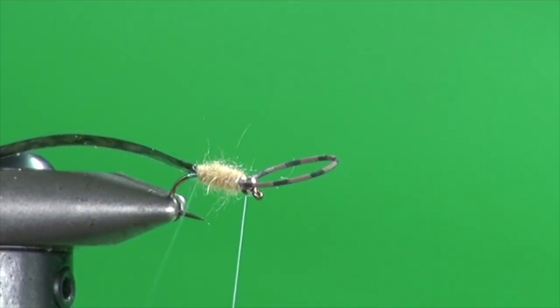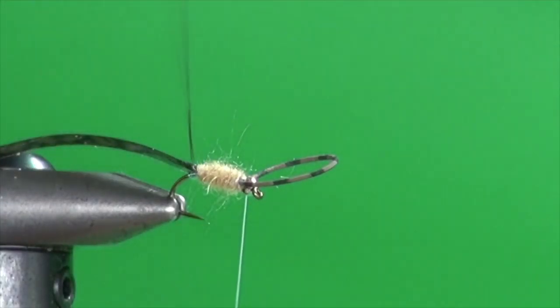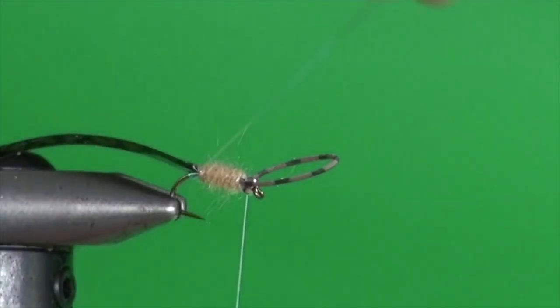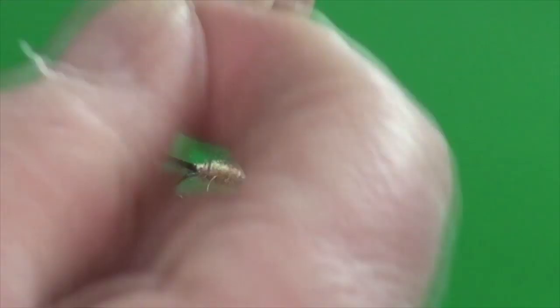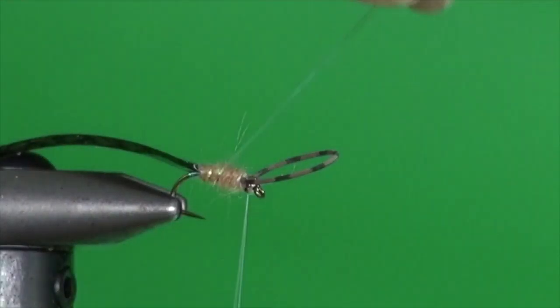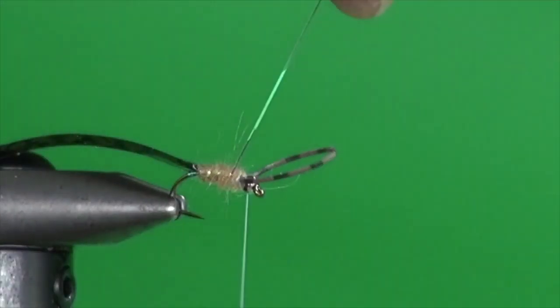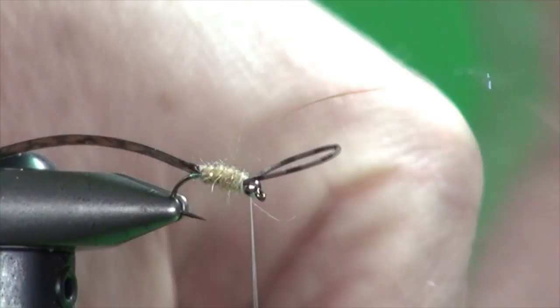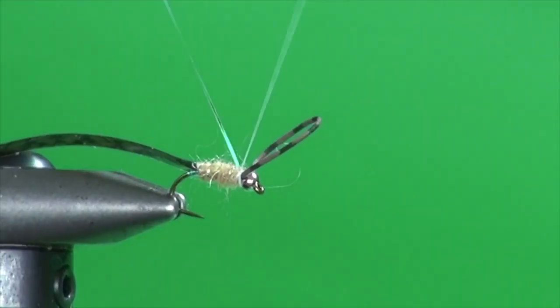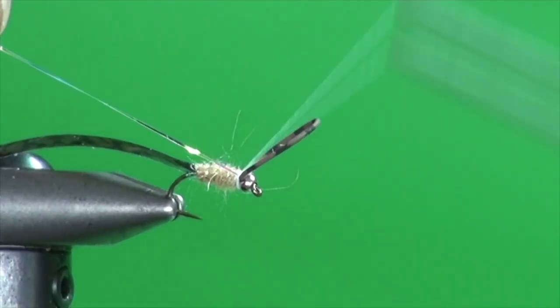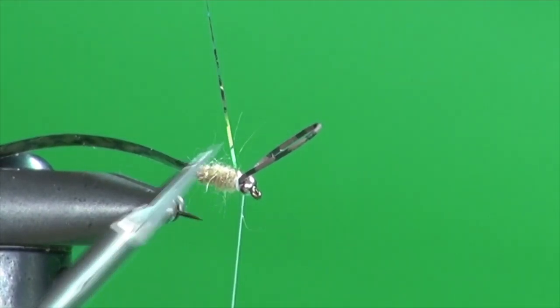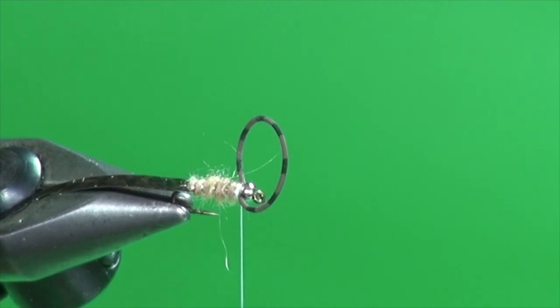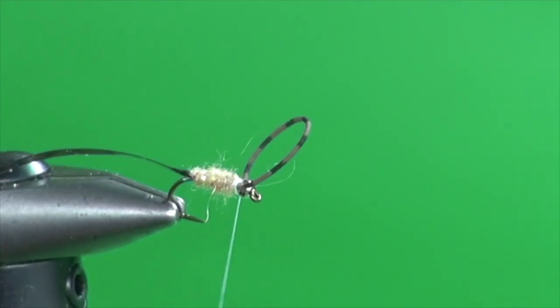And now to further augment the flash, I'm just going to take that remaining strand of the crinkle mirror flash and just rib the fly in open turns. This isn't just so much, this isn't really imitating body segmentation. All this is doing is adding another element of flash to help catch light and suggest that bubble of air that these insects take along their journeys with them, their aquatic journeys.